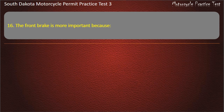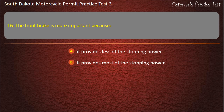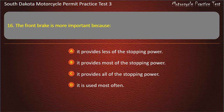Question 16: The front brake is more important because: It provides less of the stopping power; It provides most of the stopping power; It provides all of the stopping power; It is used most often. Answer: It provides most of the stopping power.